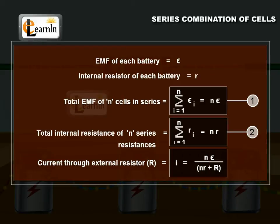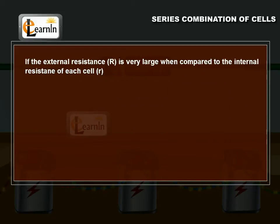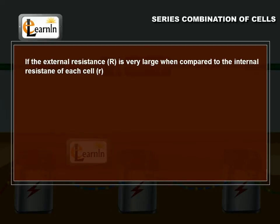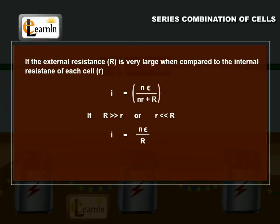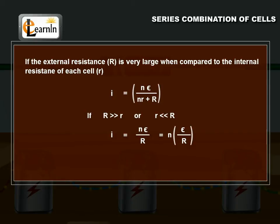The same current flows through all the cells. Now if the external resistance R is very large compared to the internal resistance of each cell, then I is equal to n times epsilon divided by R. So, in series combination of cells, I equals n times epsilon by R when the internal resistance is a negligibly small value.